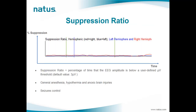The suppression ratio trend displays a running average of the percentage of EEG activity that falls below a user-specified amplitude threshold as a function of time, with time on the x-axis and the suppression ratio measure as a percentage on the y-axis. The blue line represents the suppression ratio in the left hemisphere and the red line shows the suppression ratio in the right hemisphere.